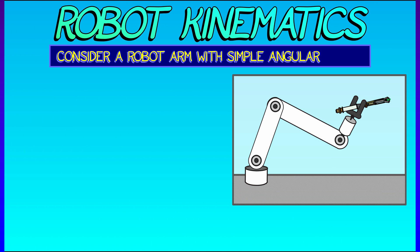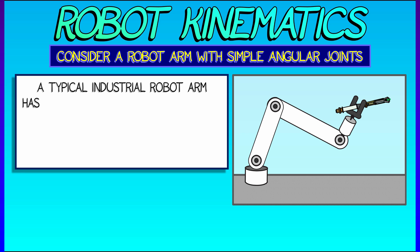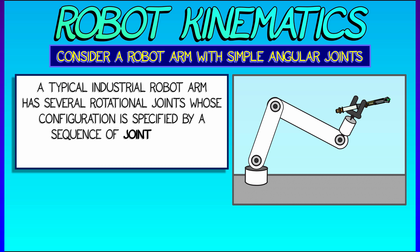So consider a standard industrial robot arm that has a number of rotational joints or angular joints. That is the shape of the robot arm. Its configuration is specified by some number of angles. Let's call them φ₁, φ₂, all the way up through φₙ. And together, these specify the configuration of the robot arm.